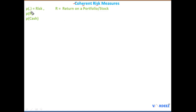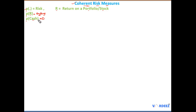Let's look at some terminology first. Mathematically, we denote R as the return on a portfolio or stock. The risk of a portfolio will reflect whatever it is invested in — stocks, commodities, etc. Importantly, the risk of cash is zero. If you have $10,000 in cash, the risk is technically zero.